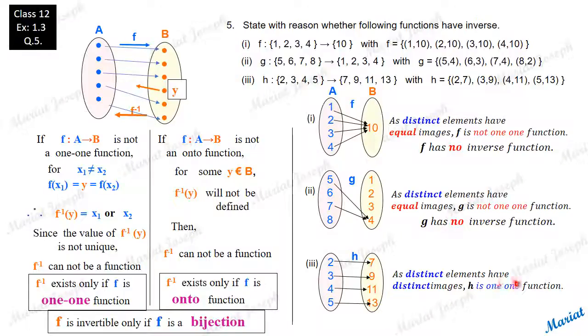As distinct elements have distinct images, h is one-one function. Since there is no element left out in the codomain which is not an image, it is onto function. Since it is one-one as well as onto, this function is invertible. Hence, the function h has an inverse.